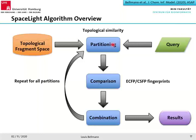Once we've generated partitions with substructures, we compare these substructures to the fragments of the space using a classic fingerprint approach — for example ECFP. We generate Tanimoto scores, rank the fragments by score, pick the highest-scoring ones, and from these chosen fragments generate combinations and conclude their scores to give each product a combined score. We repeat this for all partitions and conclude the most similar results.